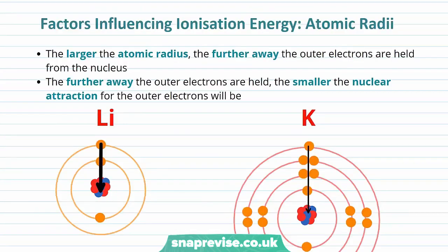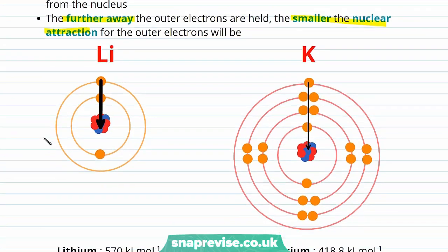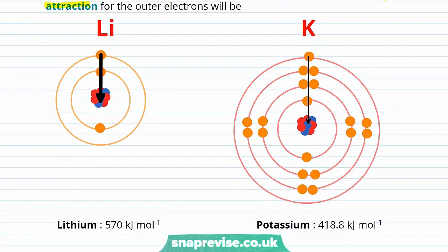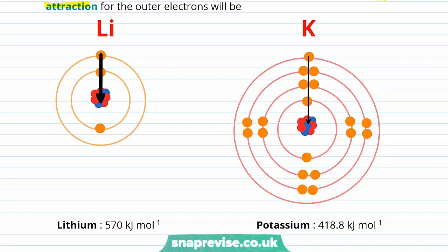What does this mean for ionization energy? The larger the atomic radius, the further away the outer electrons are held from the nucleus, and the smaller the nuclear attraction for those outer electrons. Here we have lithium and potassium — potassium has a much larger atomic radius, so its outer electrons feel a much smaller attraction towards the nucleus. That is why lithium has a much higher first ionization energy: 570 kJ/mol, whereas potassium's is only 418.8 kJ/mol.